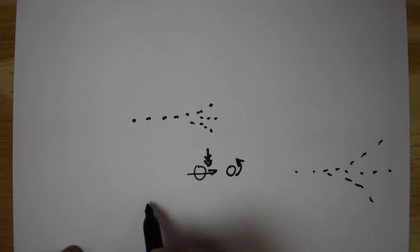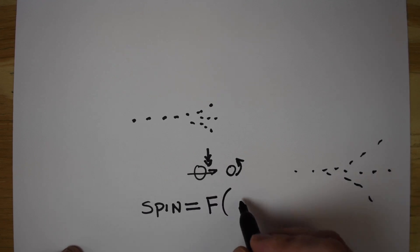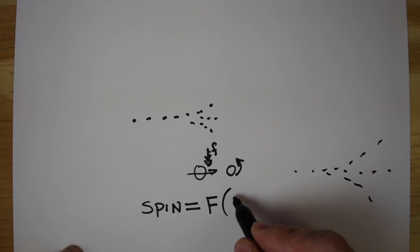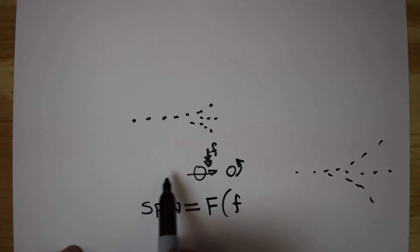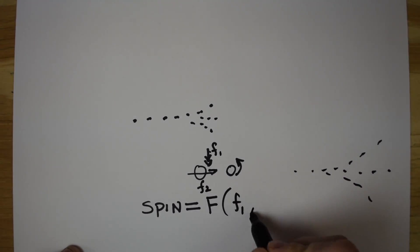Now, spin is equal to a function of this force here, call it F1, and then this force here, F2.